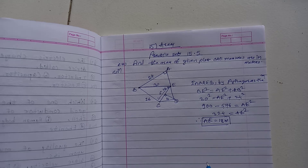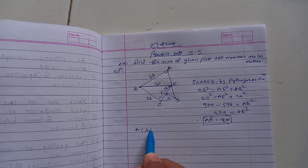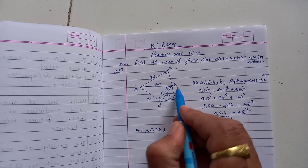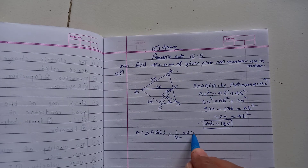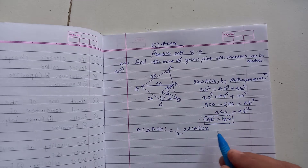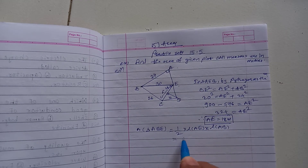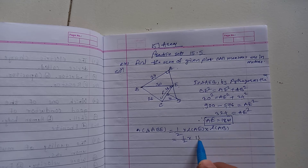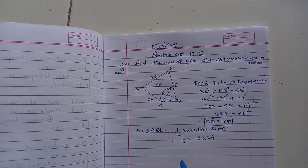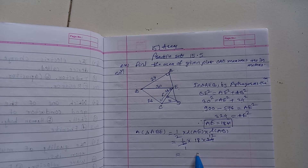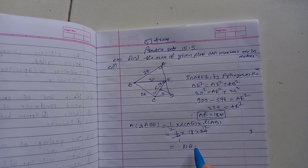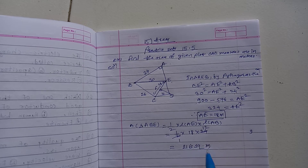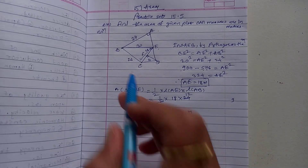Now find the area of triangle ABE. Area equals one half times base AE times height AB. Put the values: one half times 18 times 24. Dividing 18 by 2 gives 9, then 9 times 24 equals 216. So the area of triangle ABE is 216 square meters.